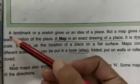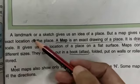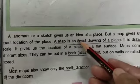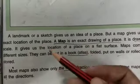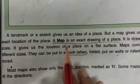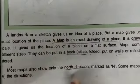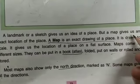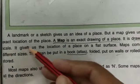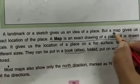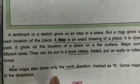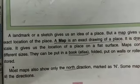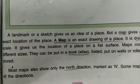Now we will take the next paragraph. A landmark or a sketch gives us a rough idea of a place - where the place is. But a map gives us an exact location of the place. It doesn't just give you a rough idea; the exact location tells you how far left or right you need to go.